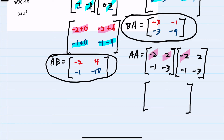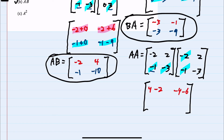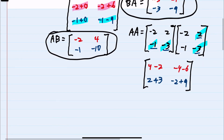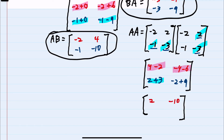Multiplying A squared, starting with row 1 times column 1: negative 2 times negative 2 is 4, and 2 times negative 1 is negative 2. Row 1 times column 2: negative 2 times 2 is negative 4, and 2 times negative 3 is negative 6. Row 2 times column 1: negative 1 times negative 2 is 2, and negative 3 times negative 1 is positive 3. Row 2 times column 2: negative 1 times 2 is negative 2, and negative 3 times negative 3 is positive 9. Simplifying: 4 minus 2 is 2; negative 4 minus 6 is negative 10; 2 plus 3 is 5; and negative 2 plus 9 is positive 7.